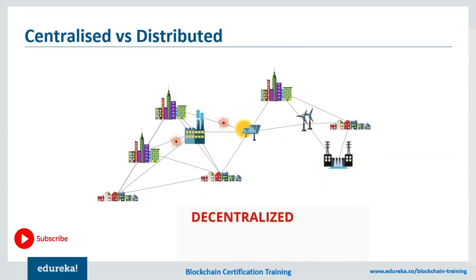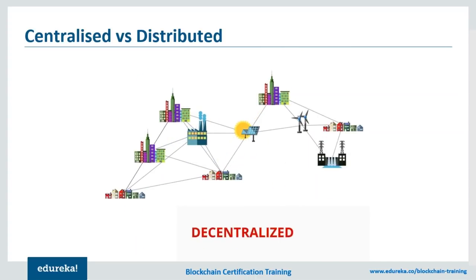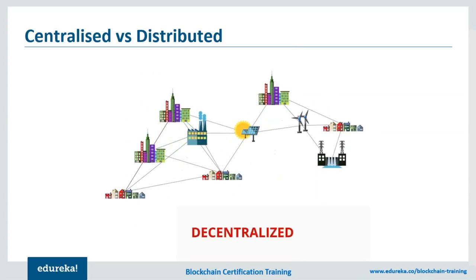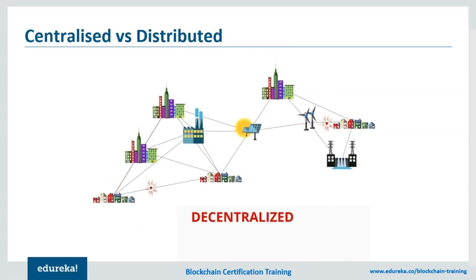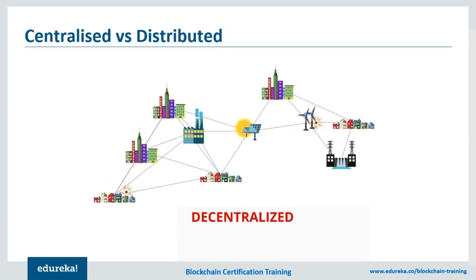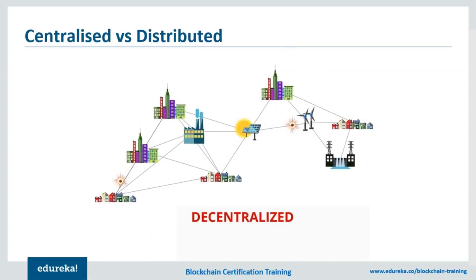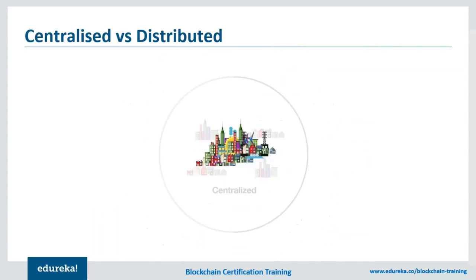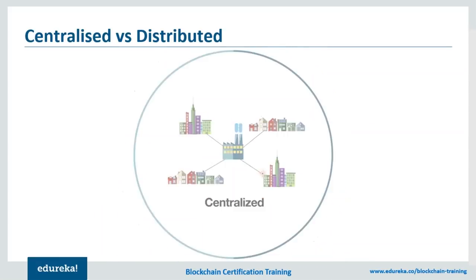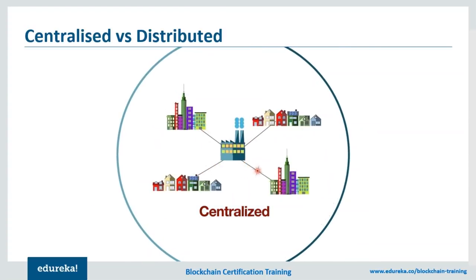It is key to understand that blockchain is a decentralized and distributed network. If something is centralized, there's a single point that does all the work involved in any given action. If something is decentralized, there are multiple points that do the same work. Think about it this way: the US government is split into both centralized and decentralized parties. The federal government is centralized because it resides in Washington DC and all decisions are made from that location. On the other hand, state governments and legislatures are decentralized because there are 50 spread throughout the United States.